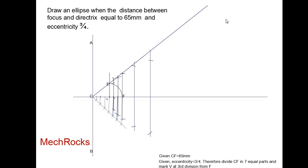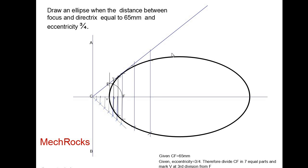Now join all these points by a smooth curve: from V to P1, P1 to P2, P2 to P3, P3 to P4, P4 to P5. You should take more lines — up to 10, 11, or 12 — until the ellipse is closed. Take points up to closing the ellipse.